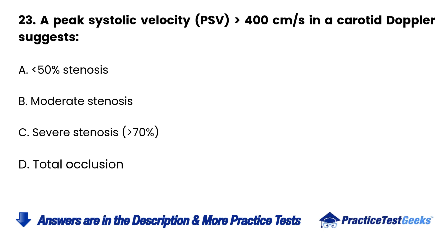Question 23. A peak systolic velocity (PSV) greater than 400 cm/s in a carotid Doppler suggests: A. Less than 50% stenosis. B. Moderate stenosis. C. Severe stenosis greater than 70%. D. Total occlusion.